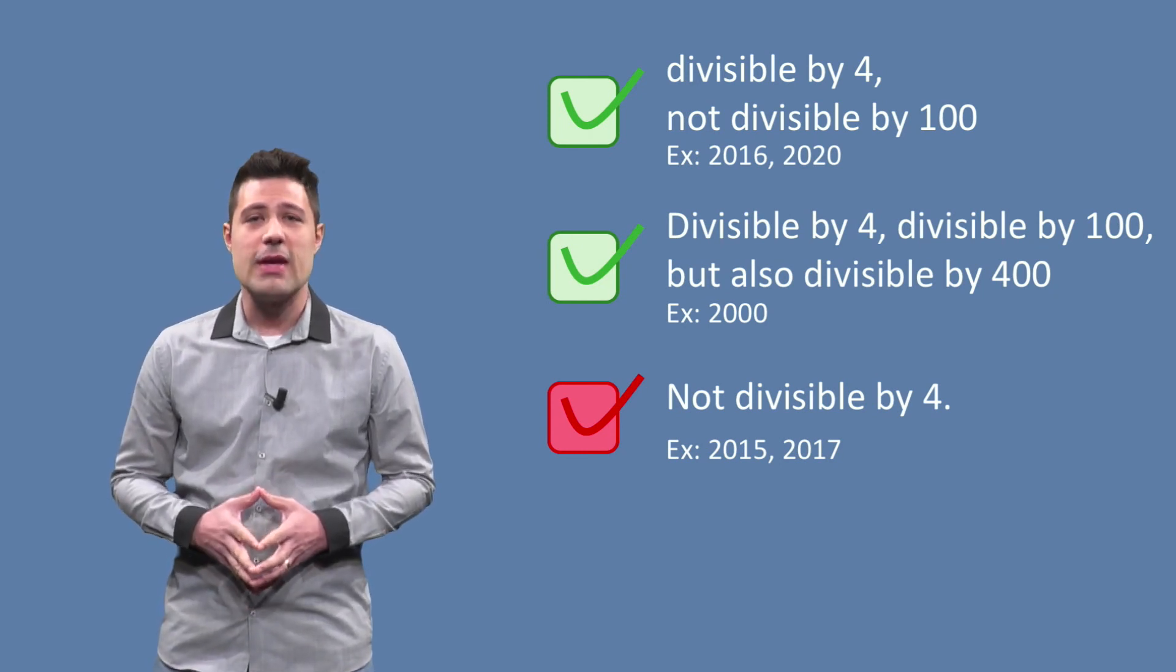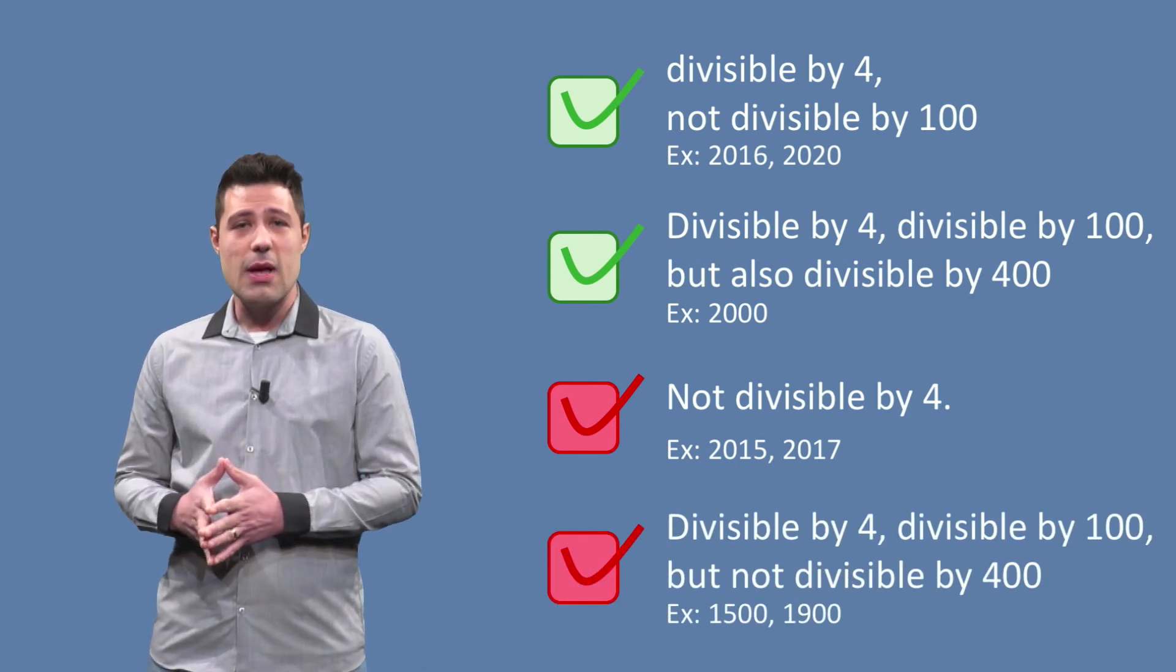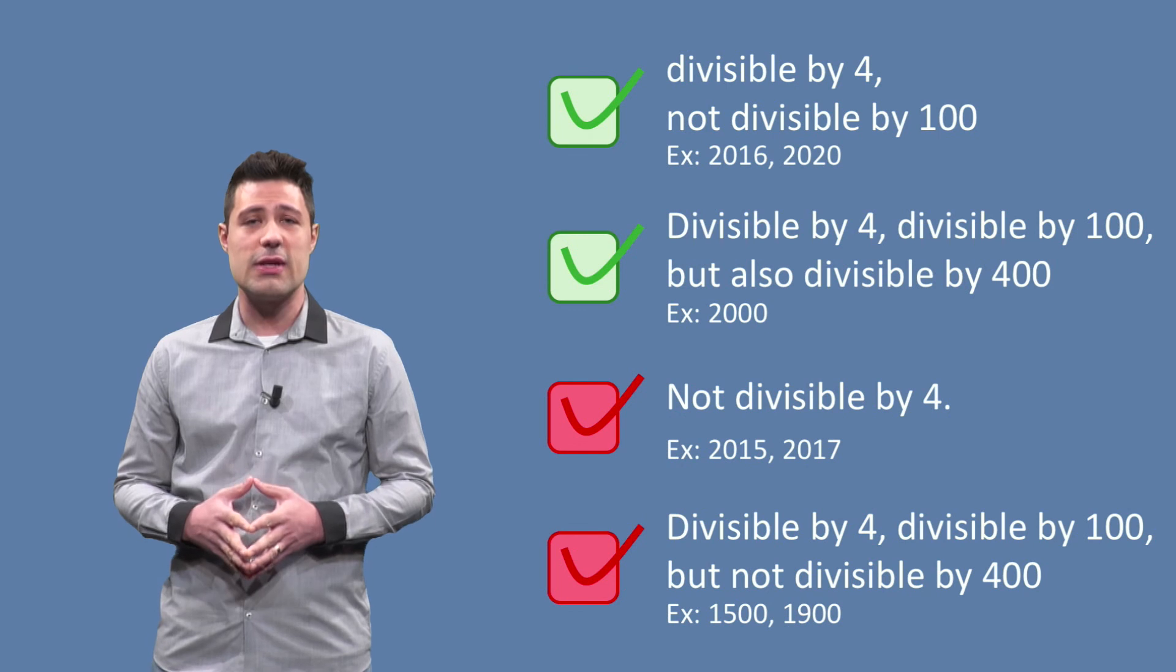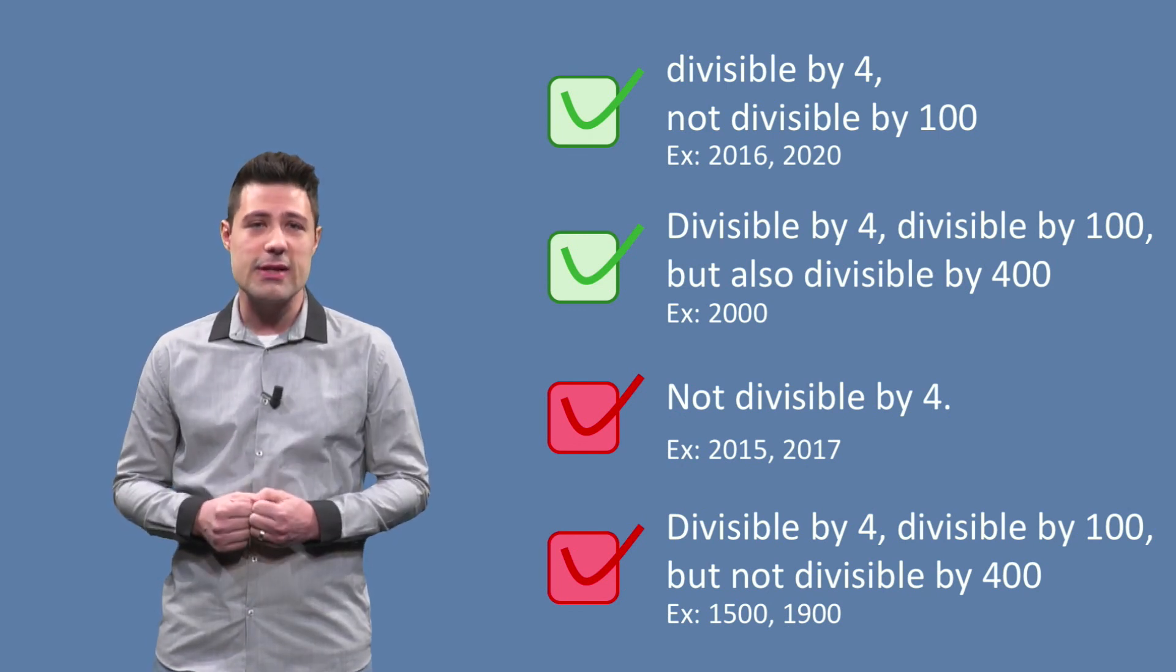Finally, a year that is divisible by 4, divisible by 100, but not divisible by 400, is not a leap year. Examples are 1500 and 1900.